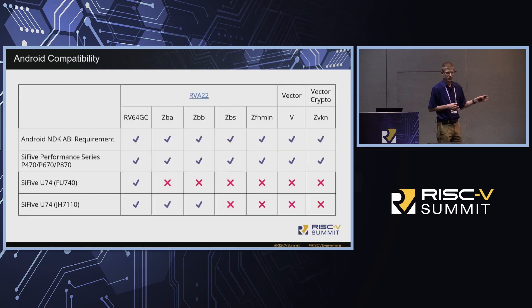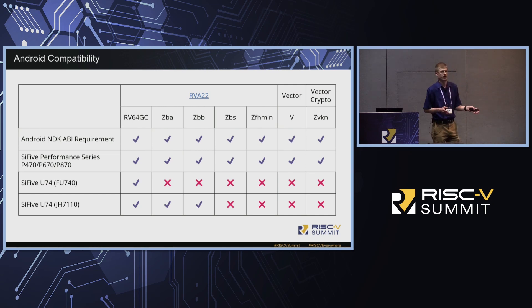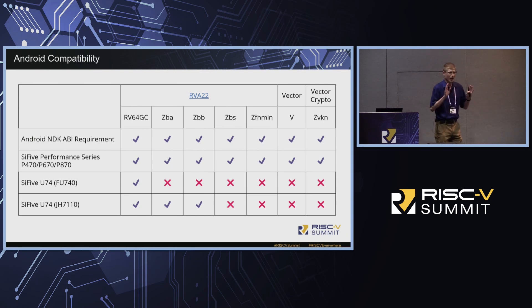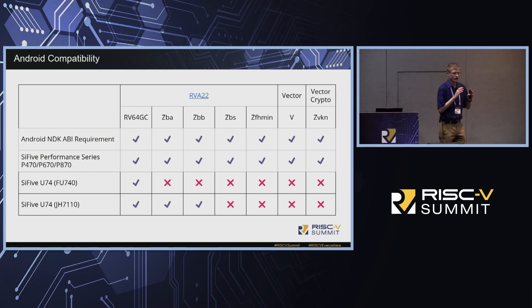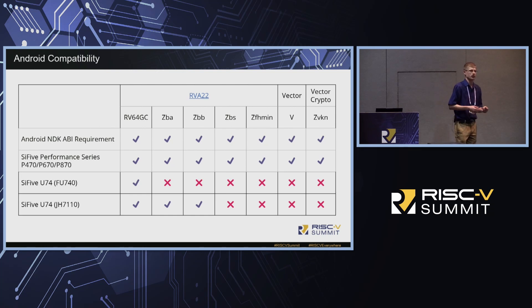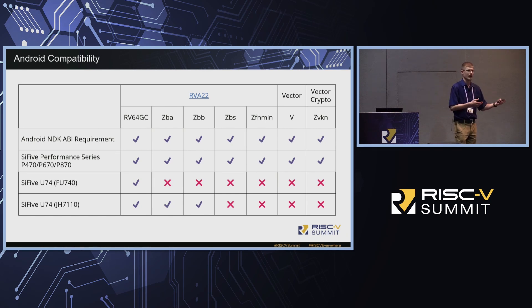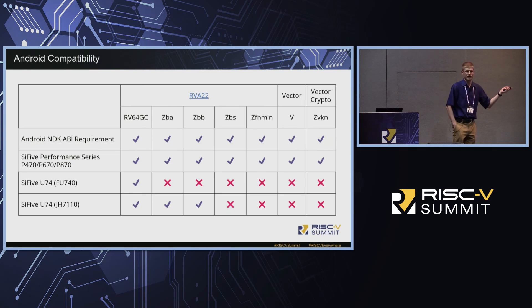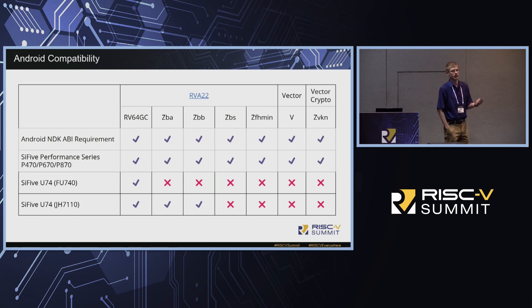For some existing SoCs like the FU740 used in our Unmatched board, it only supports RV64GC and doesn't support the entire Android ABI requirement, so it will never be officially Android compatible. But since Android is open source, we can build something based on the Android source code — an Android-like OS using AOSP — that isn't officially compatible but is very close. Our performance series, our newest chips, do support all the ISA extensions required by Android, so they could be used in Android-compatible products.